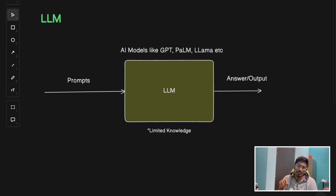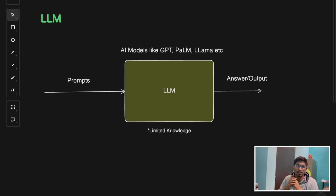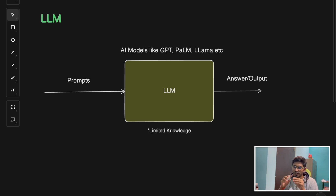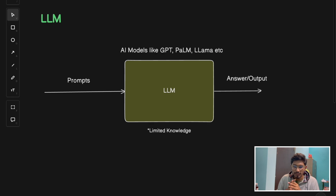Today in this video, I am going to discuss what an LLM - large language model - is and how it is different from RAG, or Retrieval Augmented Generation. LLM and RAG are two popular terms in the AI world. By the end of the video, you will not only understand the difference between LLM and RAG, but also see some hands-on examples on these two topics using LangChain.